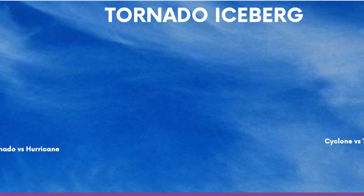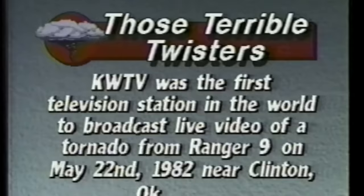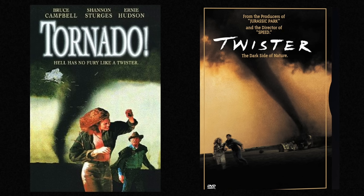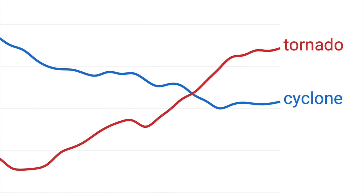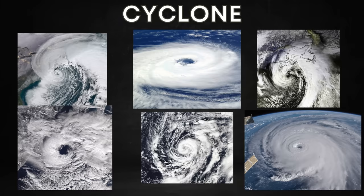Moving on to tornadoes versus twisters versus cyclones. The word tornado and the word twister mean the exact same thing — twister is just a slang term. Cyclone can mean the same thing as tornado; historically it did, as seen in old newspapers saying 'cyclone tears through city.' But now they're not really referred to as cyclones. Cyclone can also be a blanket term for any type of swirling storm system.